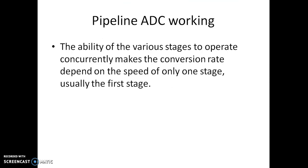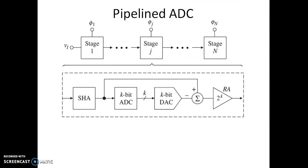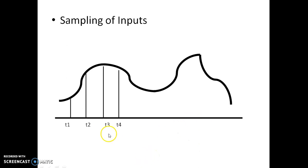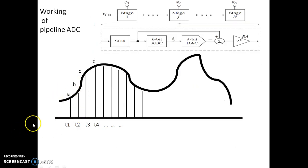The ability of various stages to operate concurrently makes the conversion rate depend on only one stage — usually the first stage. Once the first stage samples and gives the residue to the next stage, it can immediately accept the next sample. In contrast to sub-ranging where we had to wait until the fine ADC completed the process, in the pipeline ADC the first stage can accept the next sample as soon as it has completed its conversion and passed the residue to the next stage.